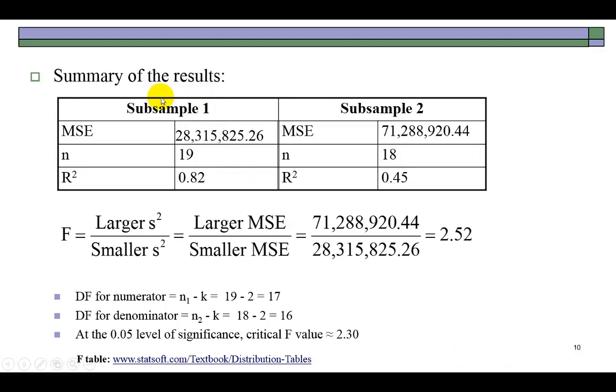So, for my subsample one, the yellow subsample, this is the mean square error. For the sky blue subsample, this is the mean square error. And these are the sample sizes. And dividing the larger mean square error by the smaller one, my F is 2.52.